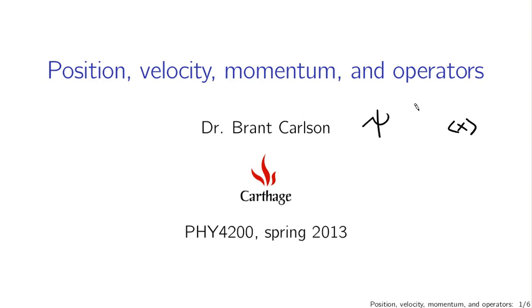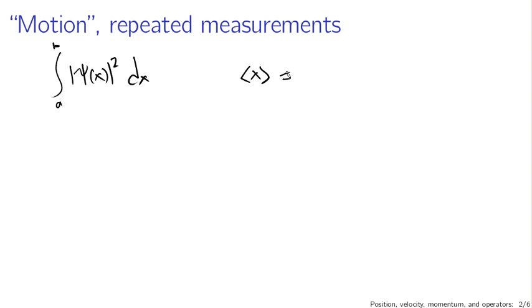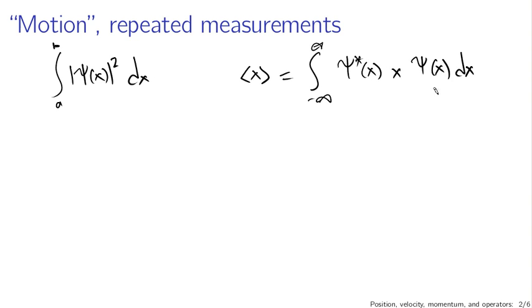Let's take a step back and think about what it means for a quantum system to move. The position of the particle — the integral from a to b of the squared magnitude of the wave function dx gives us the probability that the particle is between a and b. And we know that the expected position is given by the integral from minus infinity to infinity of psi star of x times x times psi of x dx. The squared magnitude of psi is the probability density function describing position, and this is the calculation of the expected value of x given that probability density function.